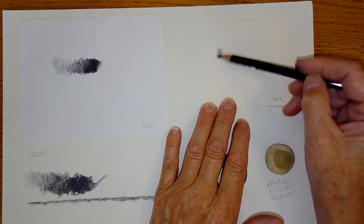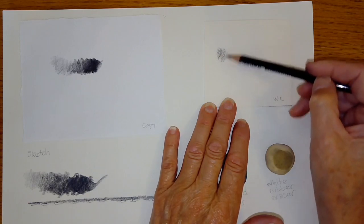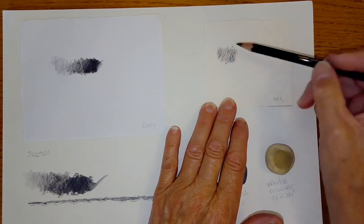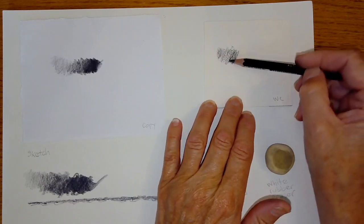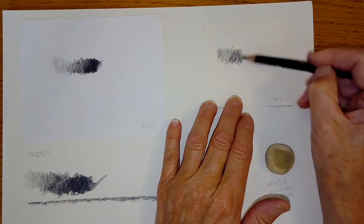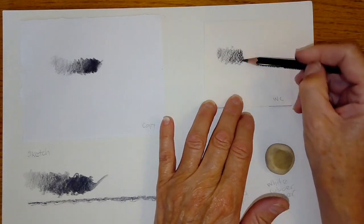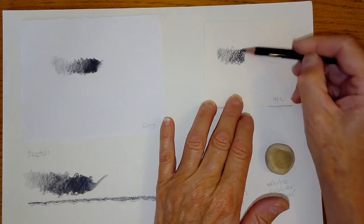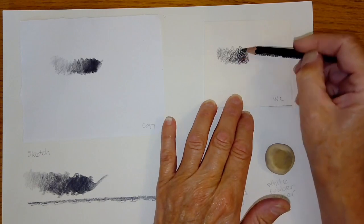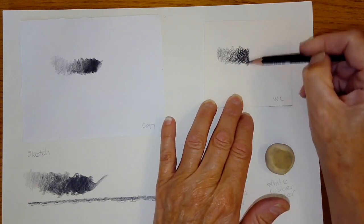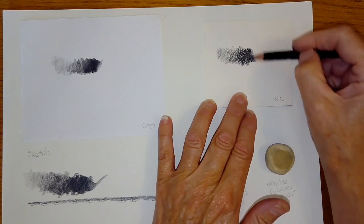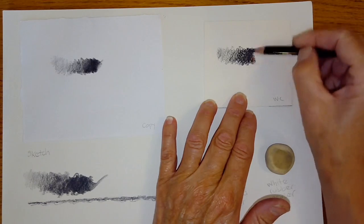Watercolor paper comes in a variety of surfaces, so we have cold press, which is what this is, and cold press refers to having a good deal of toothy surface to it. You can see that as I apply this graphite, rough surface is really rough, big bumps, big valleys or deep valleys, and usually a heavier weight to hold more water. There's also a hot press, which is smooth like copy paper, but it still has some texture.